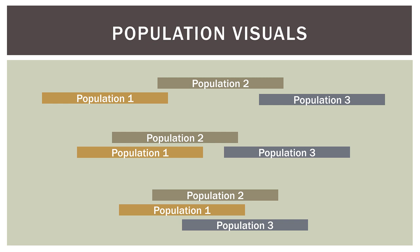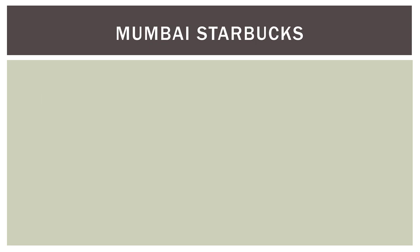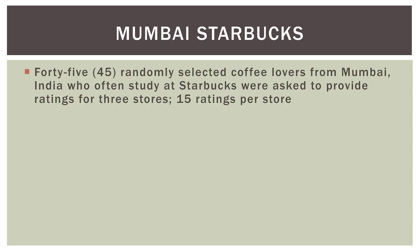That doesn't mean they're exactly the same, but it means they overlap enough to be considered statistically the same. So here's the problem we'll work with in this video. I call it Mumbai Starbucks. So 45 randomly selected coffee lovers from Mumbai, India, who often study at Starbucks, were asked to provide ratings for three stores — 15 ratings per store.